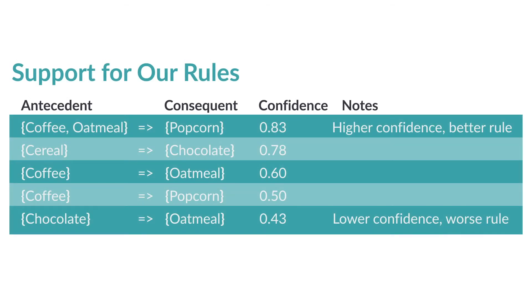We can calculate the confidence for a few of our rules and put them in a table. The first rule says if a customer has coffee and oatmeal in the cart, we are quite confident she will also add popcorn. The rules have been sorted so the highest confidence rules are at the top. Note how the first rule has two items in the antecedent — coffee and oatmeal — whereas the others have only one. Together, coffee and oatmeal predict popcorn with much higher confidence than just coffee alone.